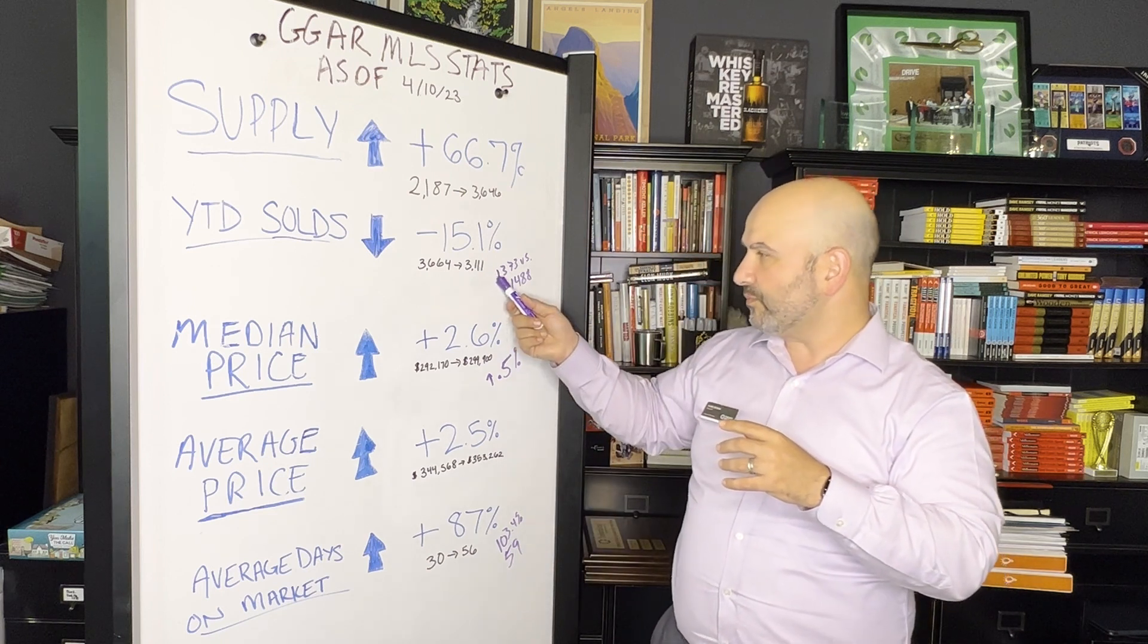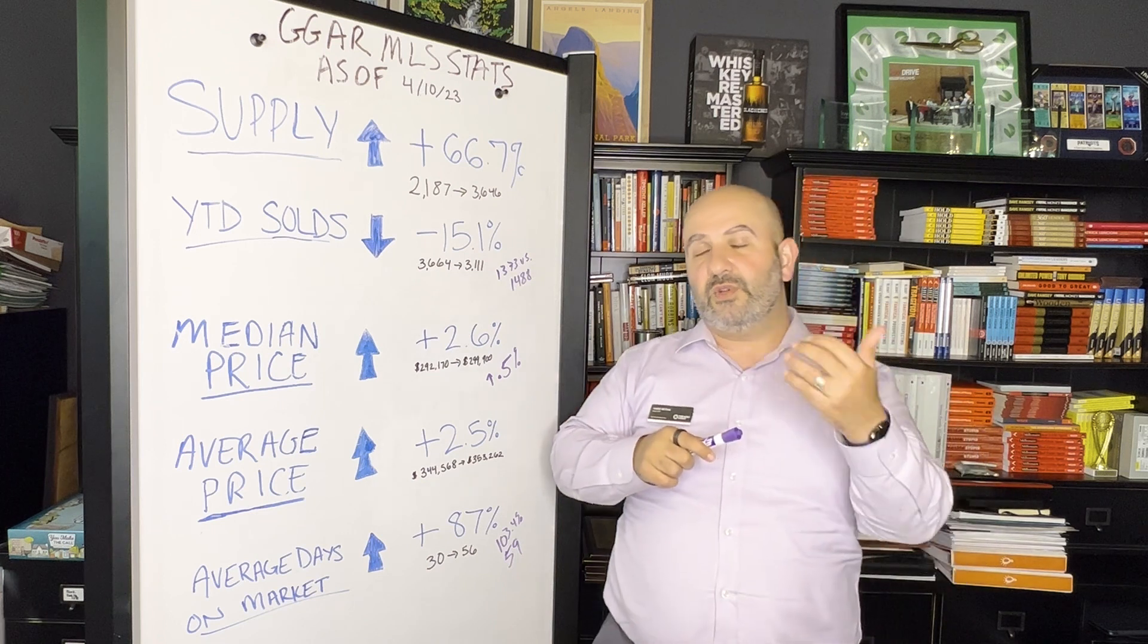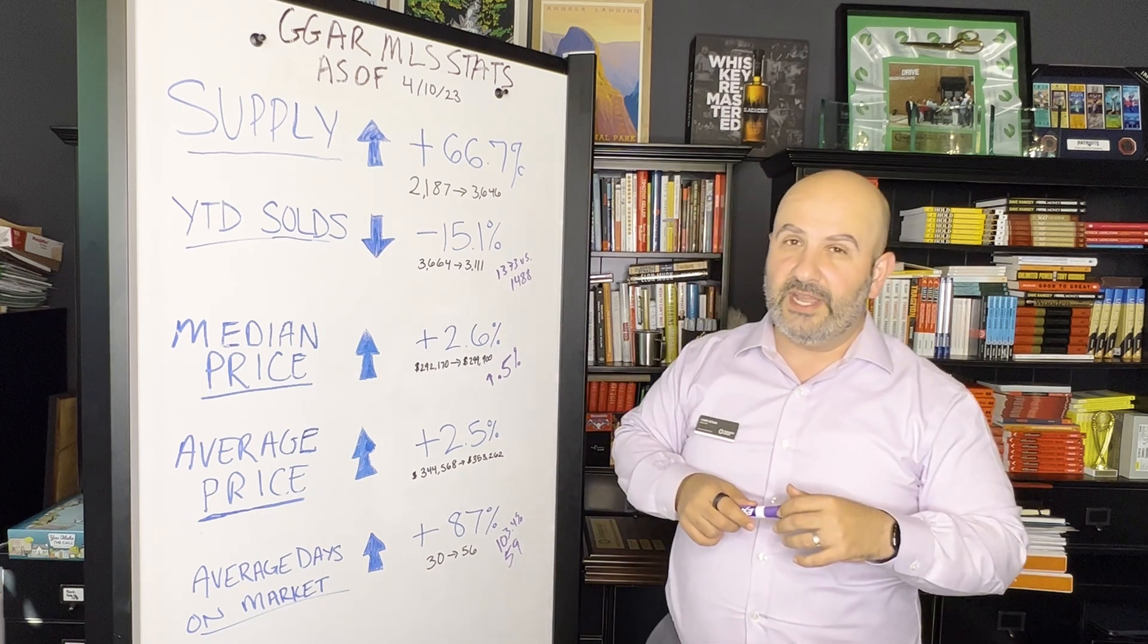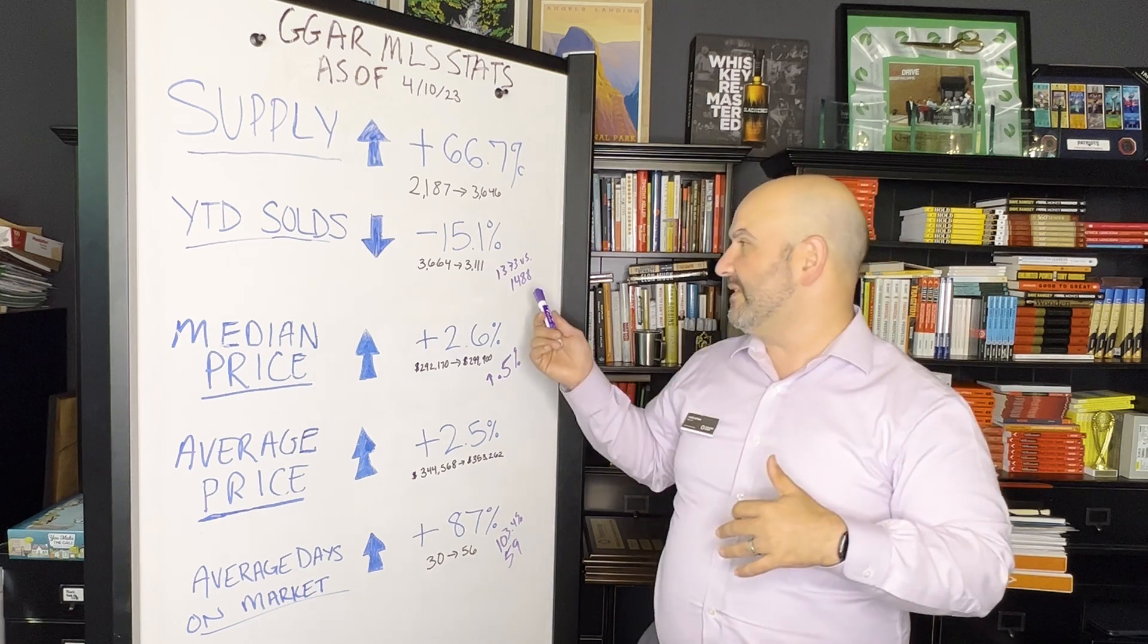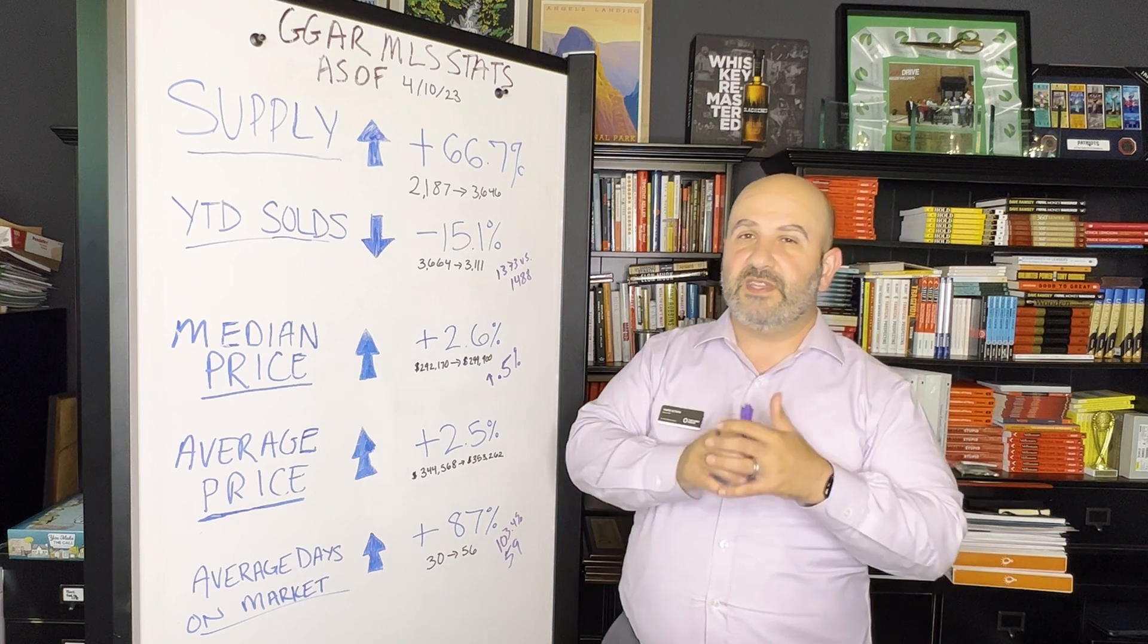This March, this year, we closed 1,373 houses. In March last year it was 1,488, so again that's about 7.7% down. That's what's bringing this number down to 15% year to date. Interesting, going to keep an eye on that one.